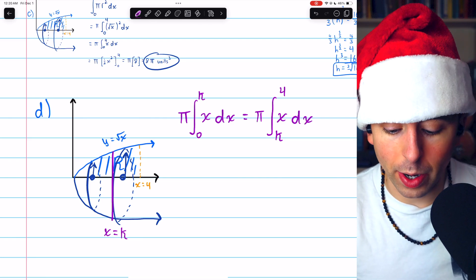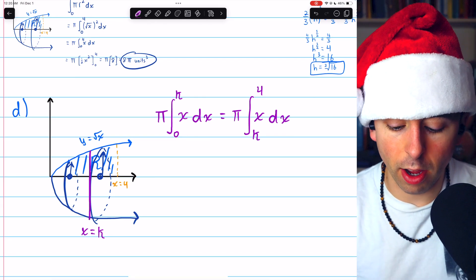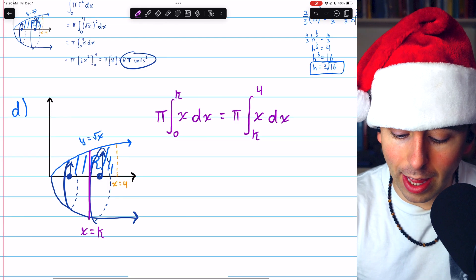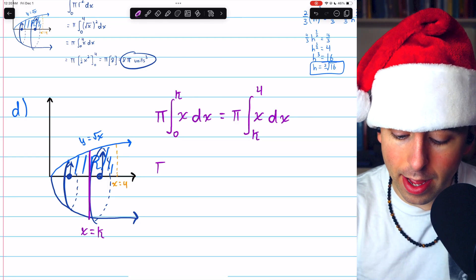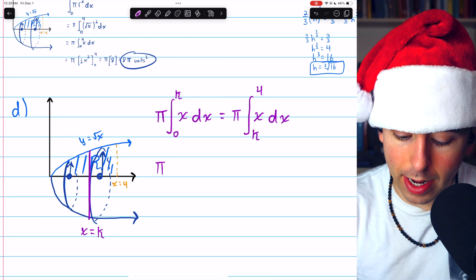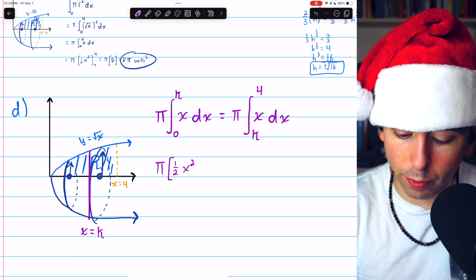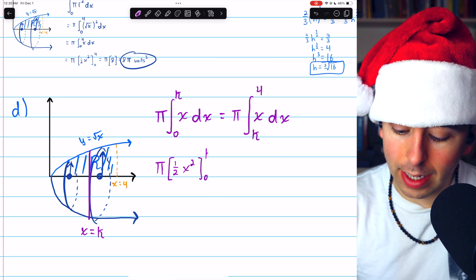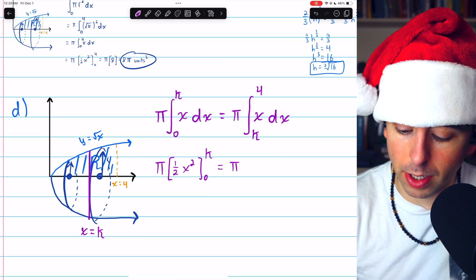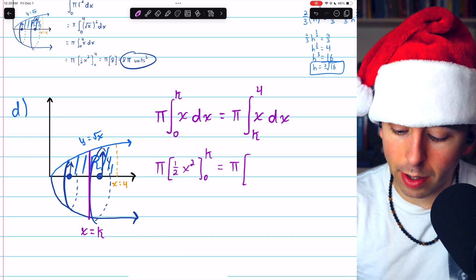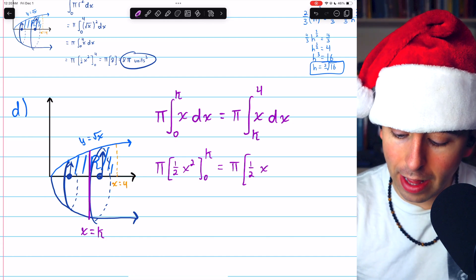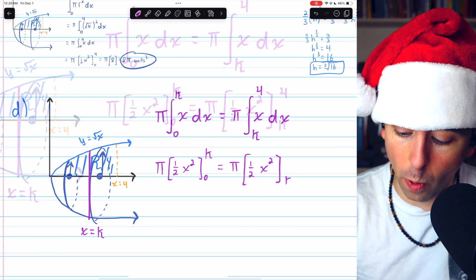Now we can evaluate these integrals and then just solve for K. So on the left, we're going to have pi multiplied by 1 half X squared evaluated from 0 to K. This equals, on the right, pi multiplied by 1 half X squared evaluated from K to 4.